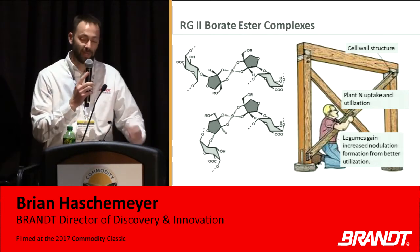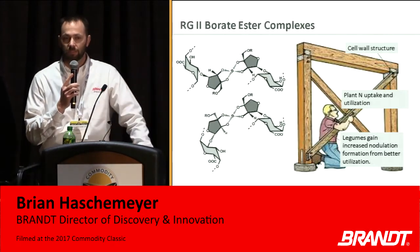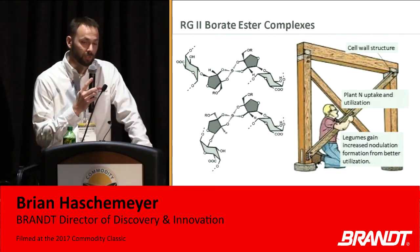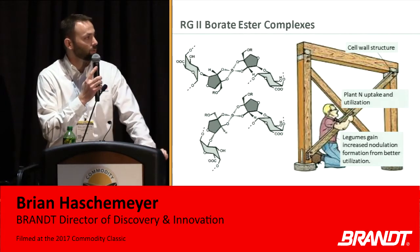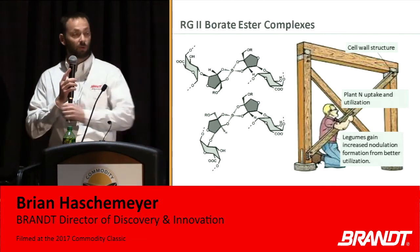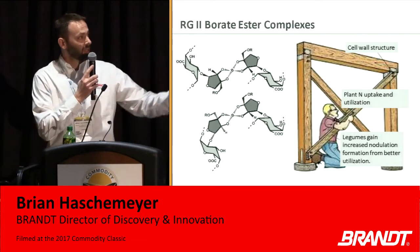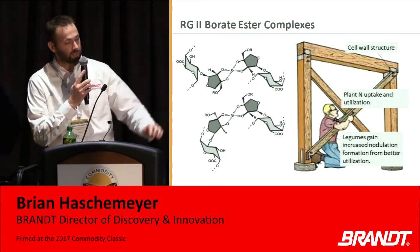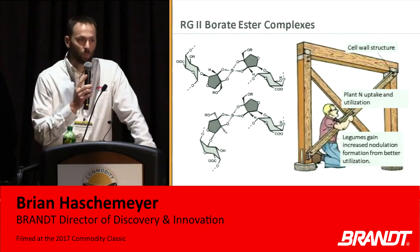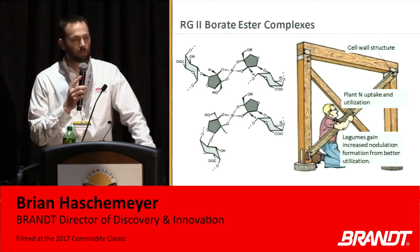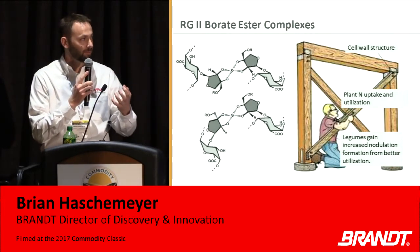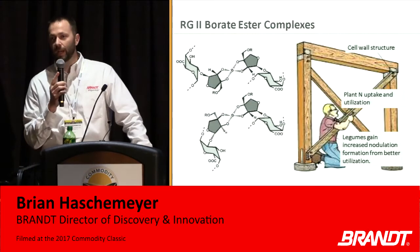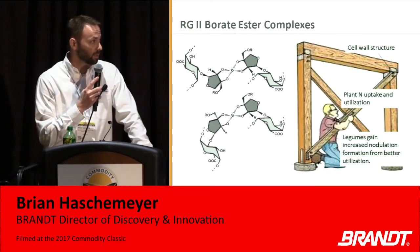Boron is really important in expanding cell tissues and growing points in the plant — meristematic tissues — and also extremely important during the reproductive cycle. One of the things we've identified in our research is that when you apply foliar boron, it actually gets through the cuticle fairly well, at least compared to other micronutrients. But once it gets through the cuticle down into the apoplastic cells, it tends to bind to pectins, which are polymeric sugars.